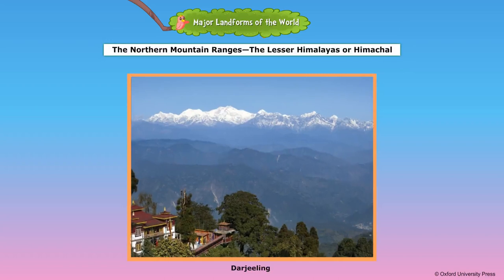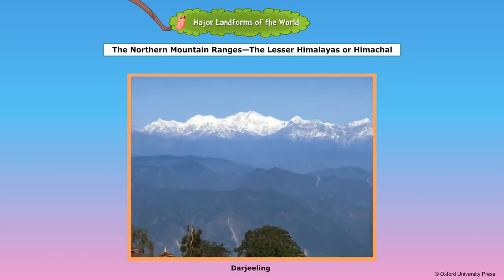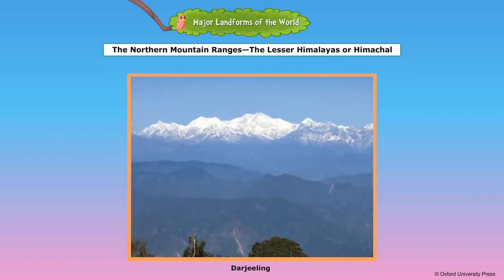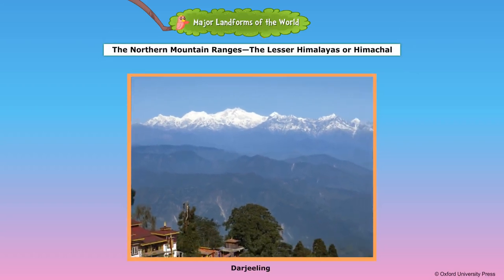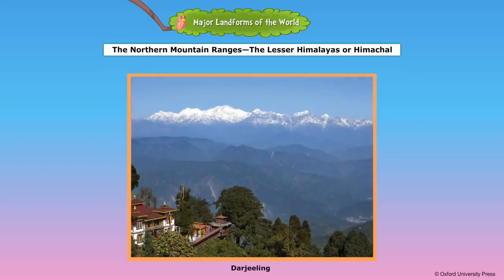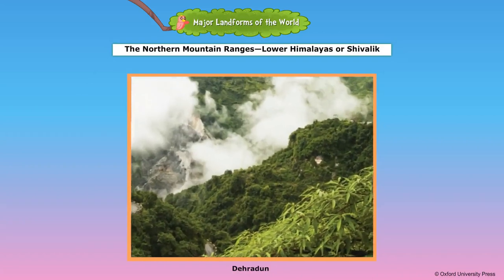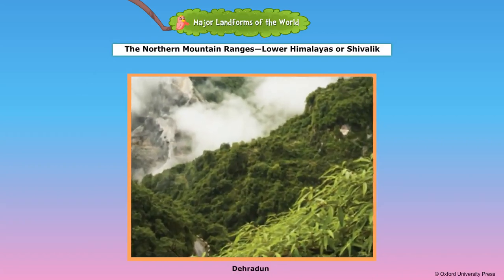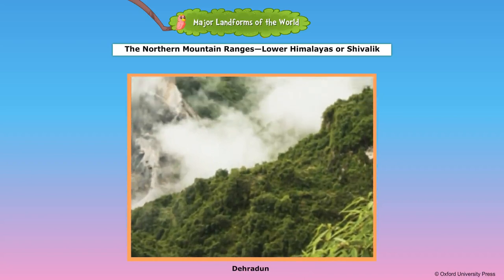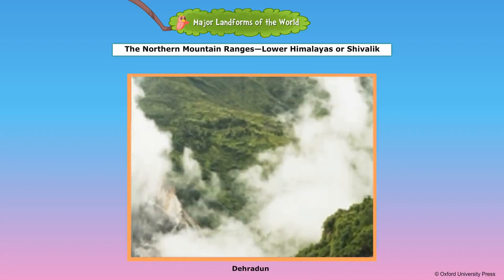The Lesser Himalayas. The middle ranges of the northern mountain ranges are called the Lesser Himalayas or Himachal. Shimla, Nainital, Darjeeling, and other hill stations are situated in the Lesser Himalayas. The southernmost ranges of the Himalayan mountains are the Shivalik Range. Dehradun is an important dune or valley of this range.